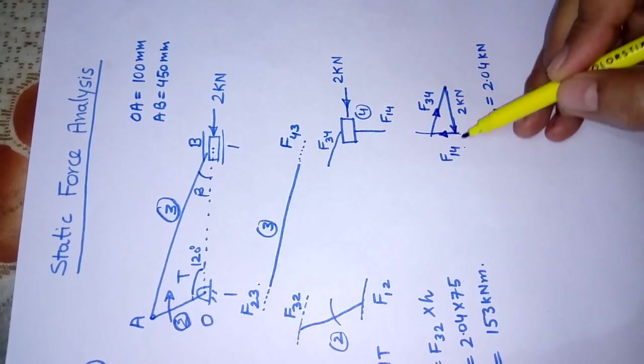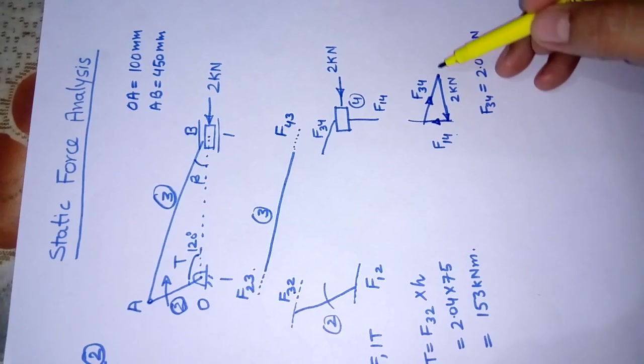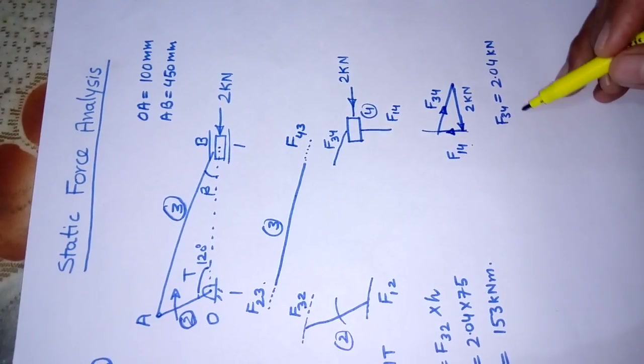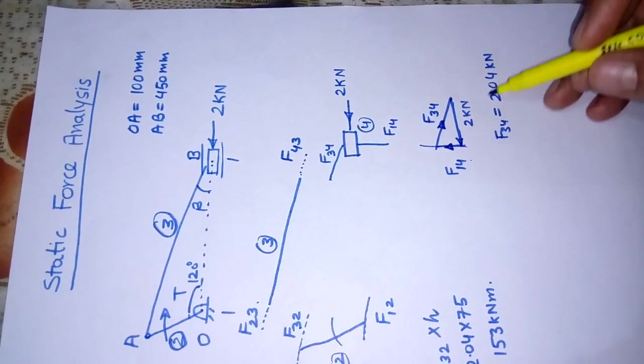If we take the proper scale and draw graphically, we can determine the value of F34 is going to be approximately 2.04 kilonewtons.